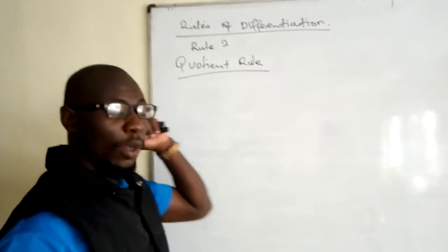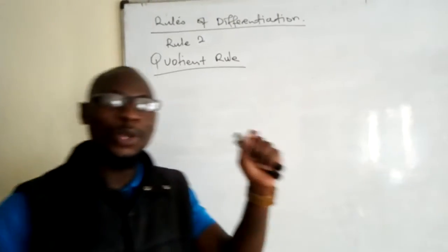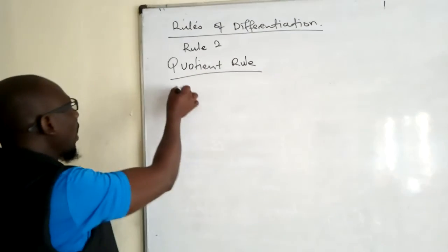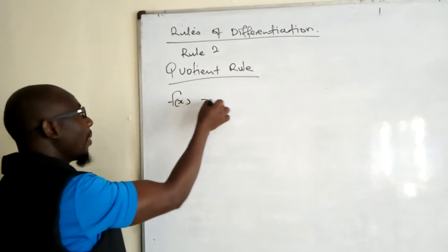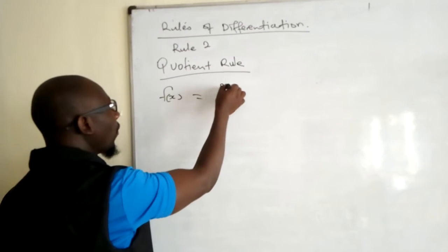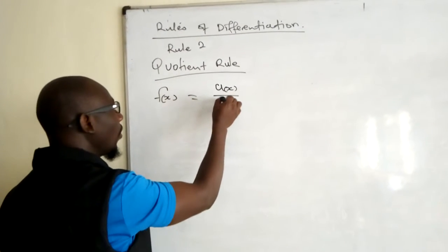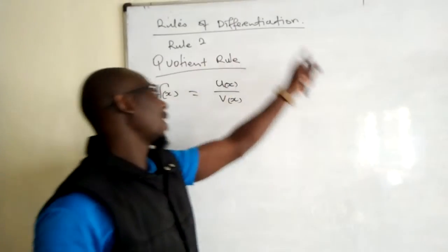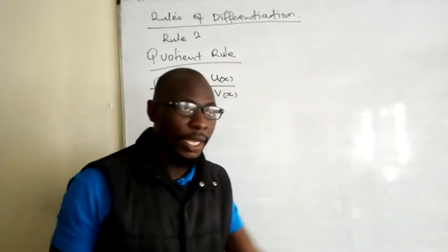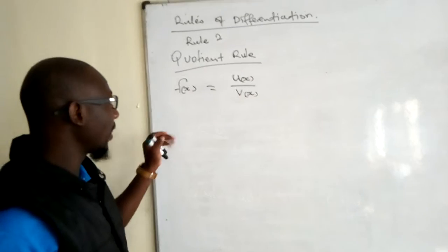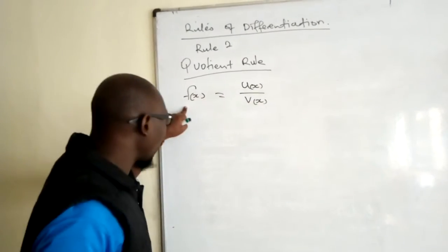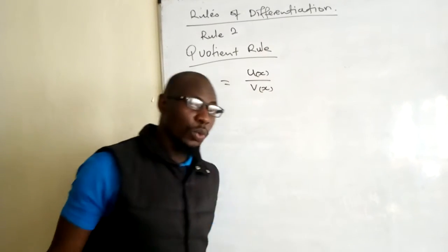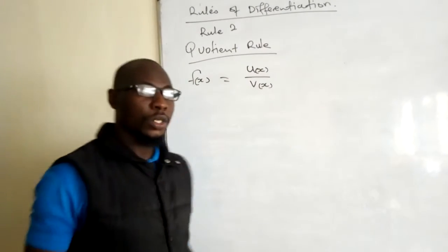Now let's look at what we call the quotient rule as our second rule of differentiation. The quotient rule is given that a function f of x is equal to u of x divided by v of x, where u of x and v of x are both functions of x. These two functions are divided, so it's a quotient. To get the derivative of such a function, we apply the quotient rule.